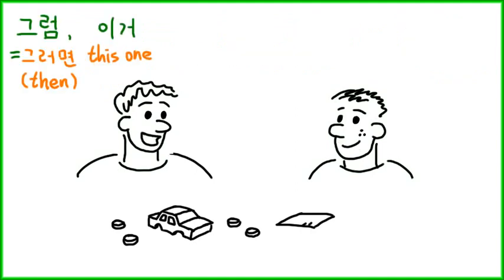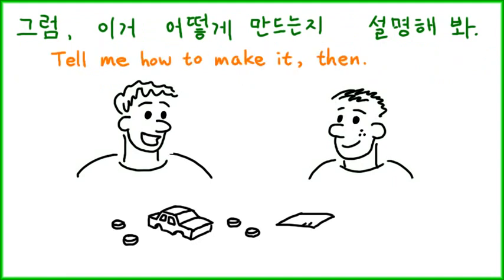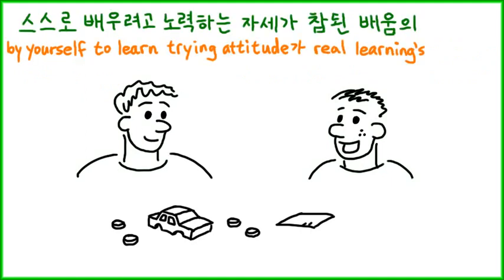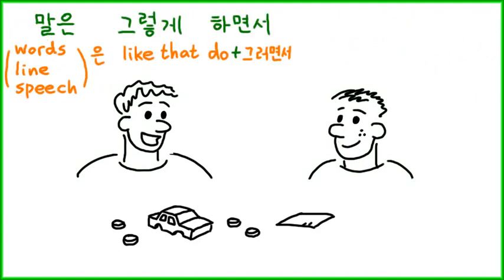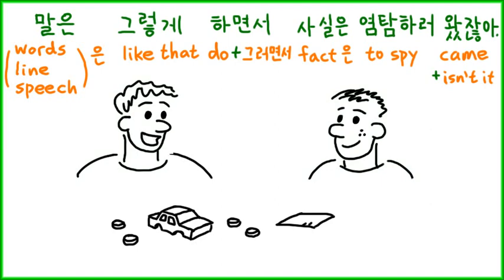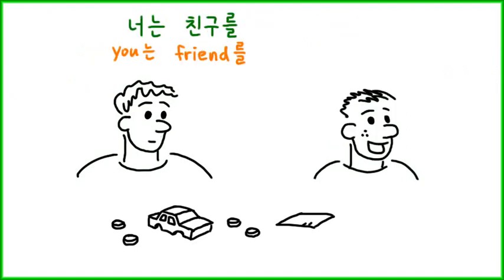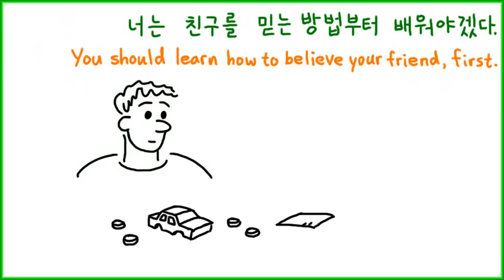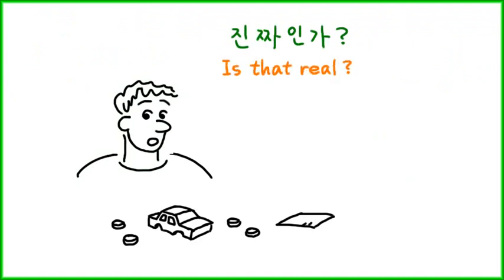정말이야! 난 이미 다 만들었어. 스스로 배우려고 노력하는 자세가 참된 배움의 자세란다. 말은 그렇게 하면서 사실은 염탐하러 왔잖아. 너는 친구를 믿는 방법부터 배워야겠다. 진짜인가?